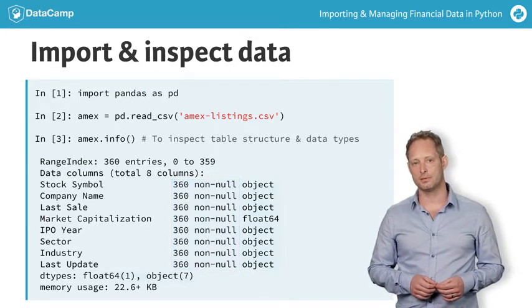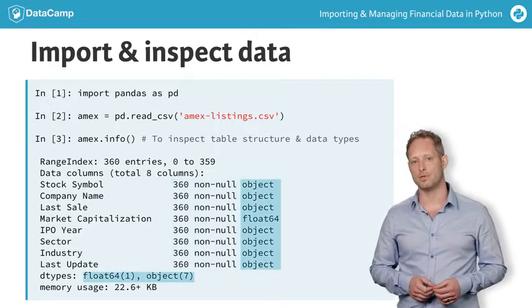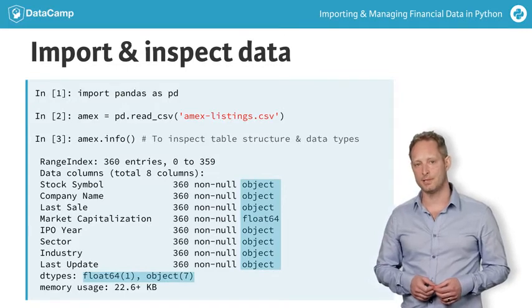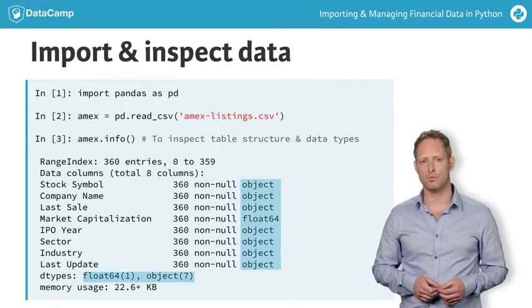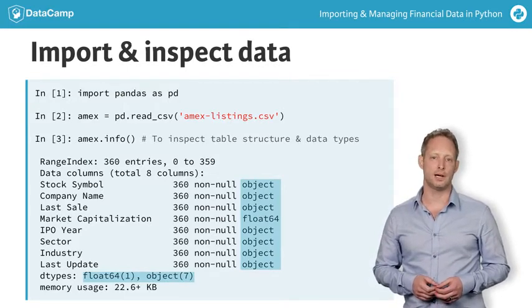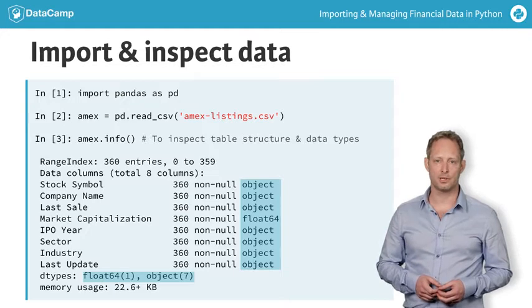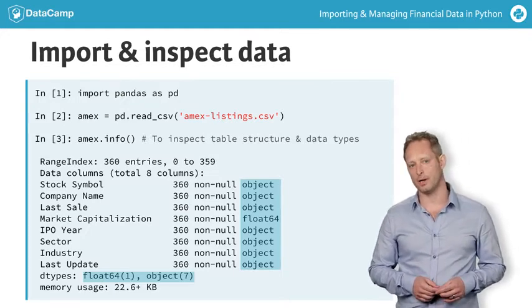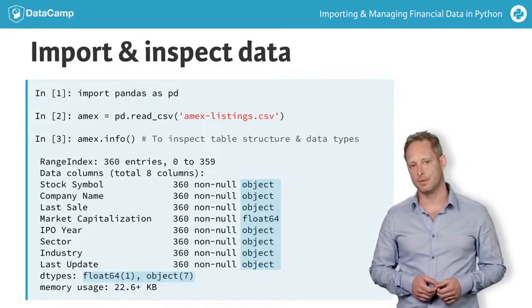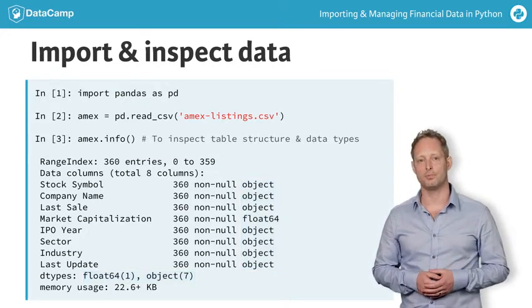Seven columns are of dtype object — that is, text data — and only one has dtype float. Instead, you would have expected three numeric and one datetime column. So let's fix the import result.